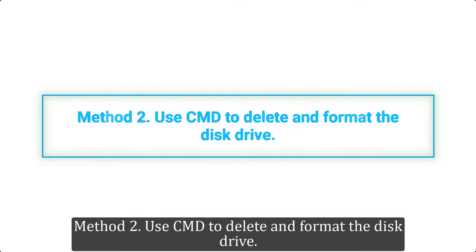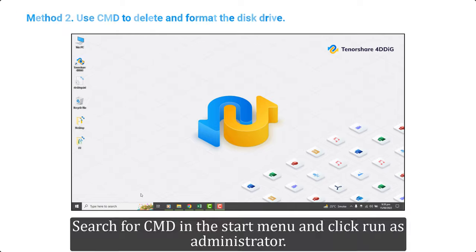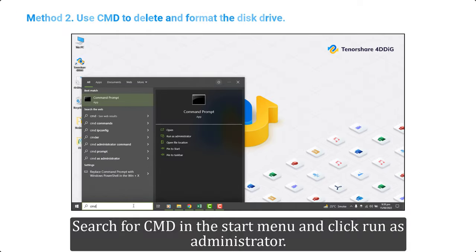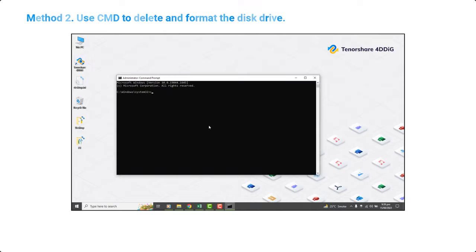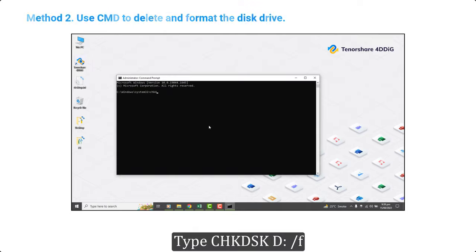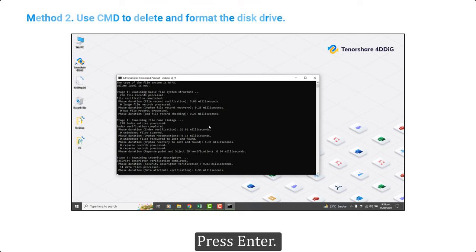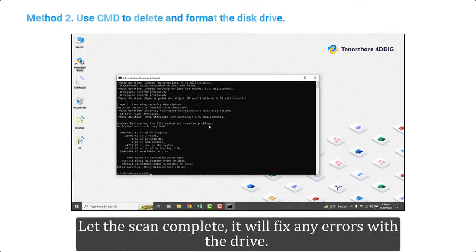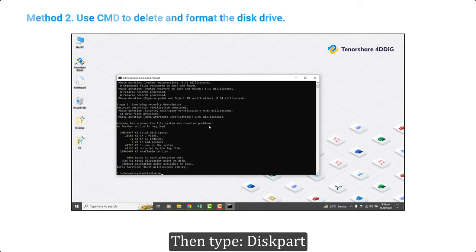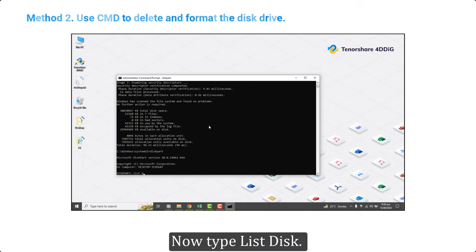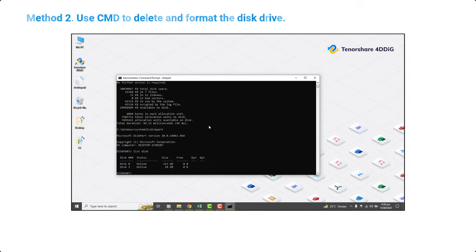Method 2: Use CMD to delete and format the disk drive. Search for CMD in the Start menu and click Run as Administrator. Type 'chkdsk D: /f' — here D is the drive letter for your drive — and press Enter. Let the scan complete; it will fix any errors with the drive. Then type 'diskpart'.